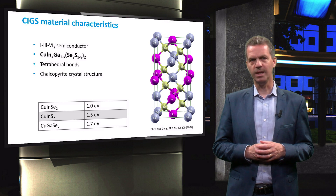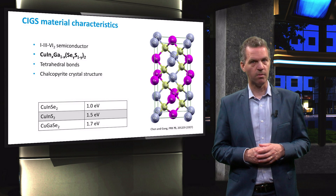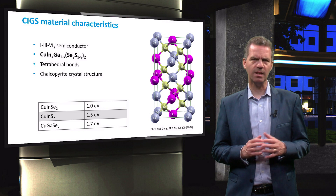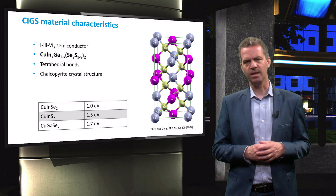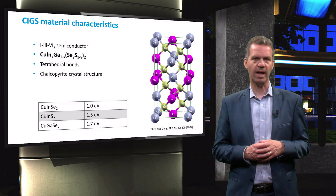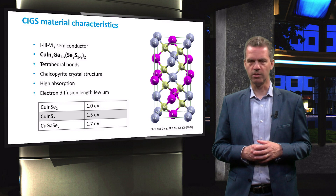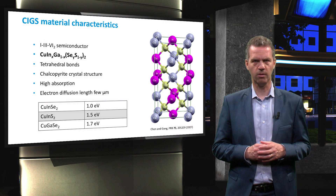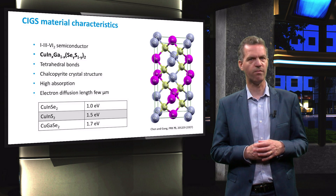By changing the ratio between indium and gallium and the ratio between sulfur and selenide, the electronic band gap of the material can be varied significantly between 1 and 1.7 eV, as can be seen in this table. Adding gallium to the structure, for instance, increases the band gap of the material. This material has a very high absorption coefficient, which makes it a suitable material for the thin film technology. And on top of this, the diffusion length of electrons can be up to a few micrometers.